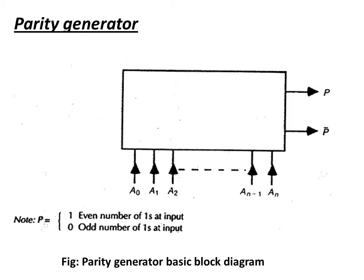I will continue with module 4 and will be discussing a parity generator example. This figure shows the basic block diagram for the generalized parity generator. Here we have input bits a0, a1, a2 till an, and at the output side we have p and p-bar, which are the parity outputs.